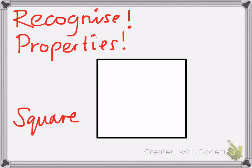For all polygons you need to be able to recognize them and also identify the properties of them. With quadrilaterals this can be quite tricky because there are so many different types.